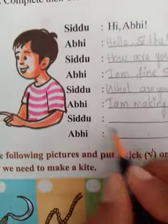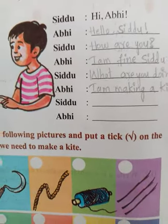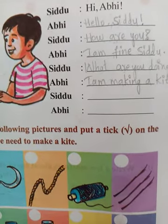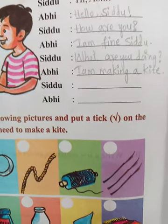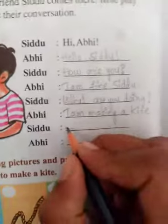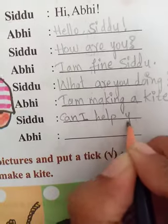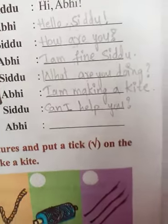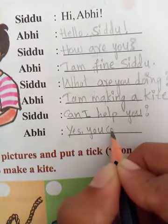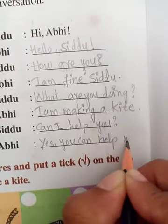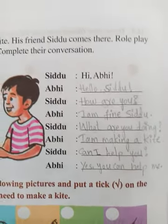If your friend is doing something, you will help them, right? You need some help to make a kite. So Sidhu might ask: 'Can I help you?' And Abhi answers: 'Yes, you can help me.' This is the conversation between Abhi and Sidhu.